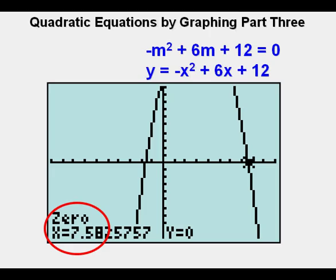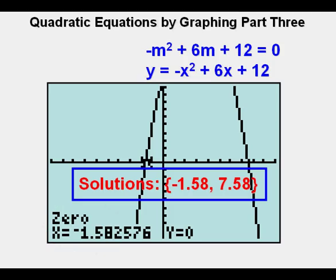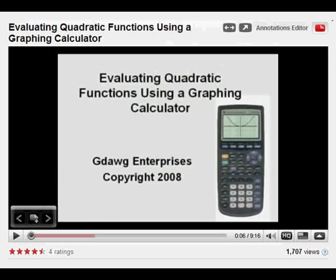Here's the solution on the right side of the parabola, 7.58 when rounded to the nearest hundredth. And here's the solution on the left side, -1.58 when rounded to the nearest hundredth. So the solutions are approximately -1.58 and 7.58.